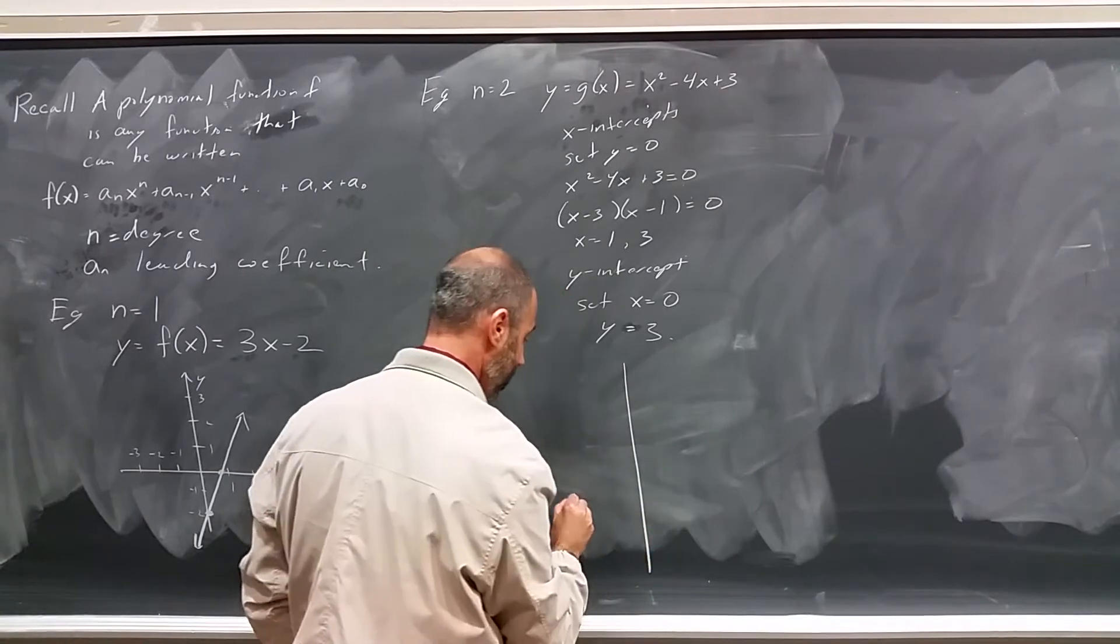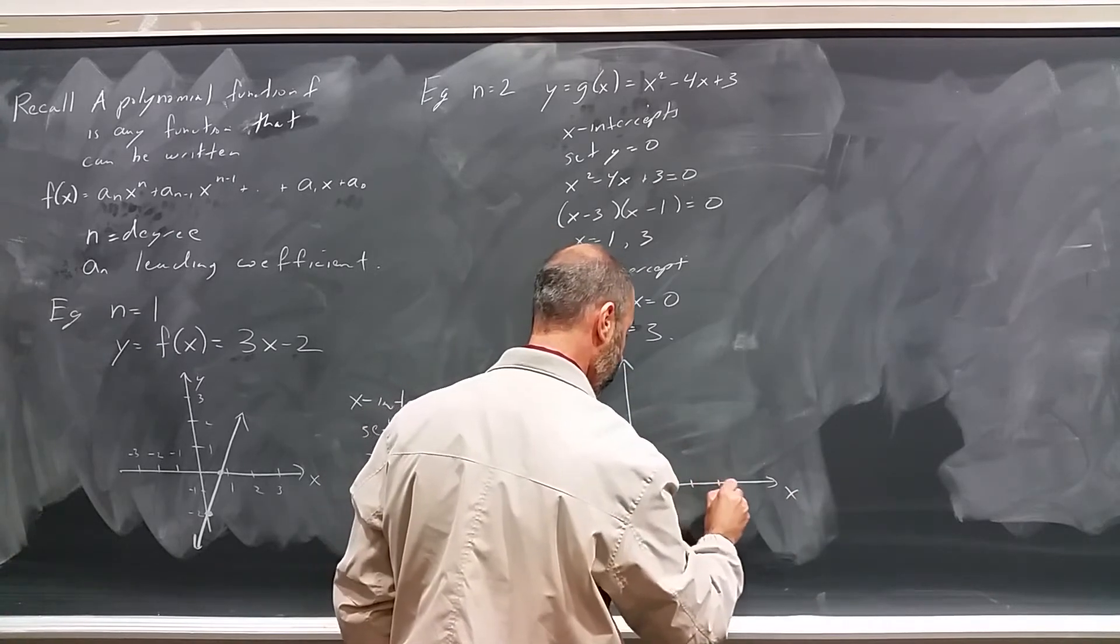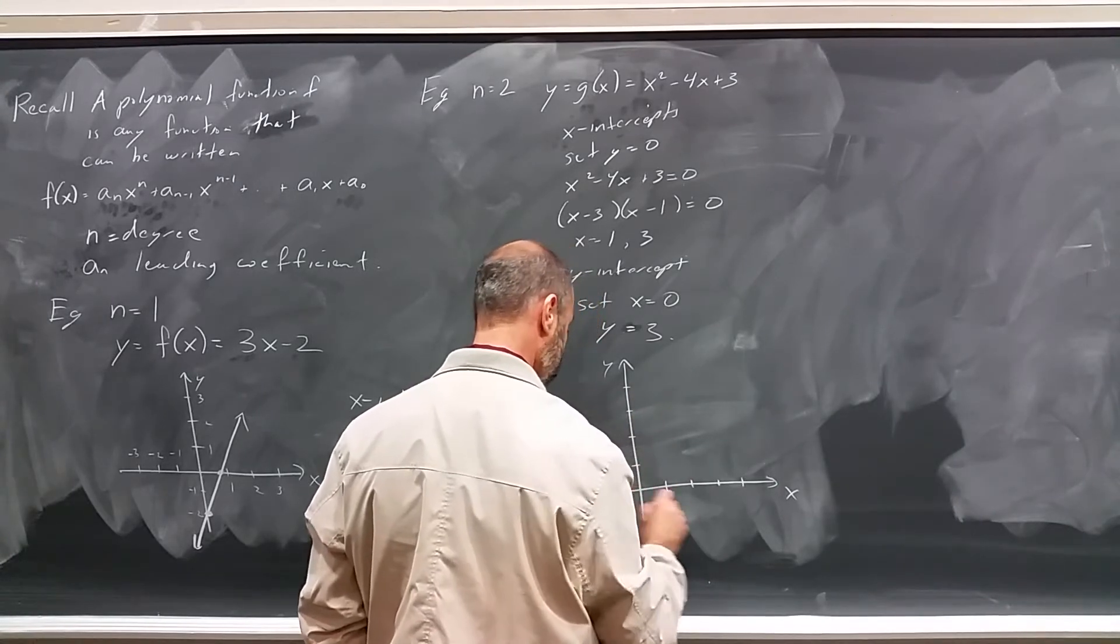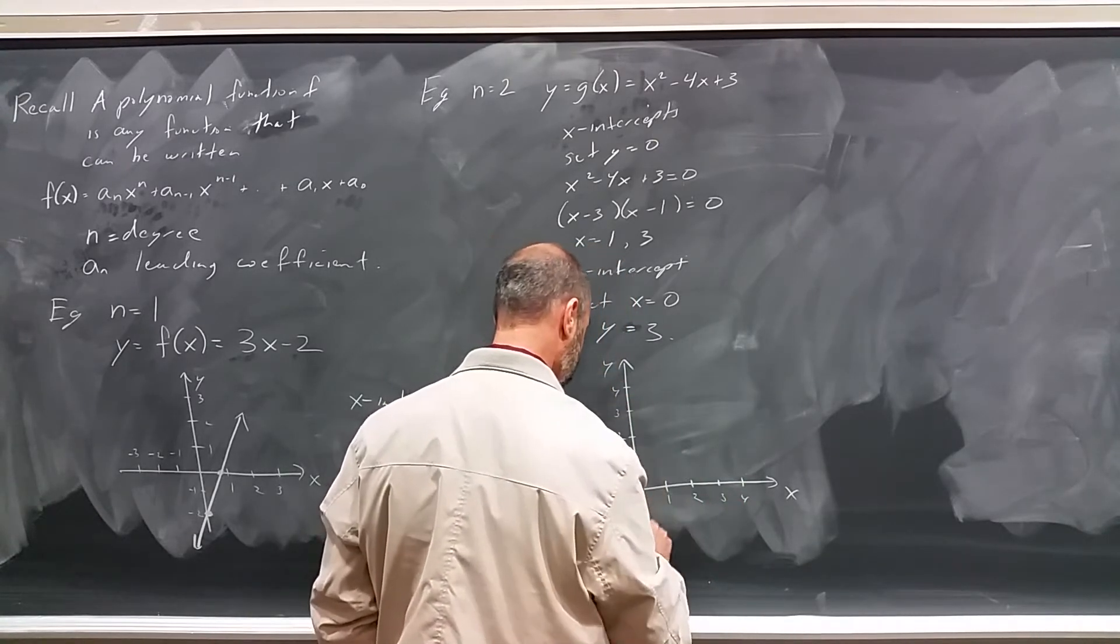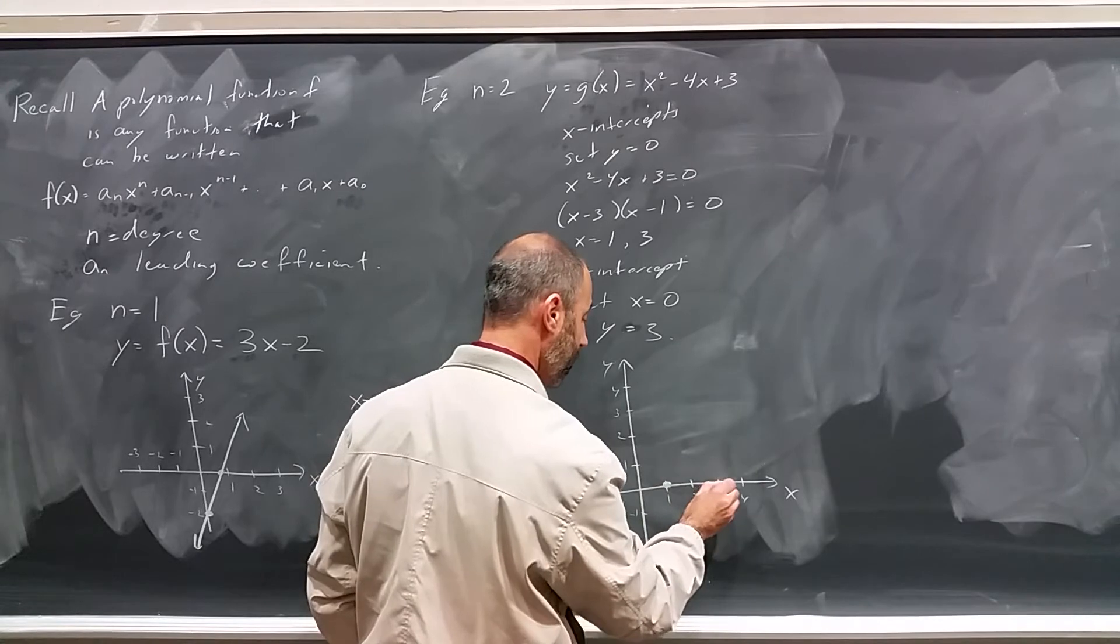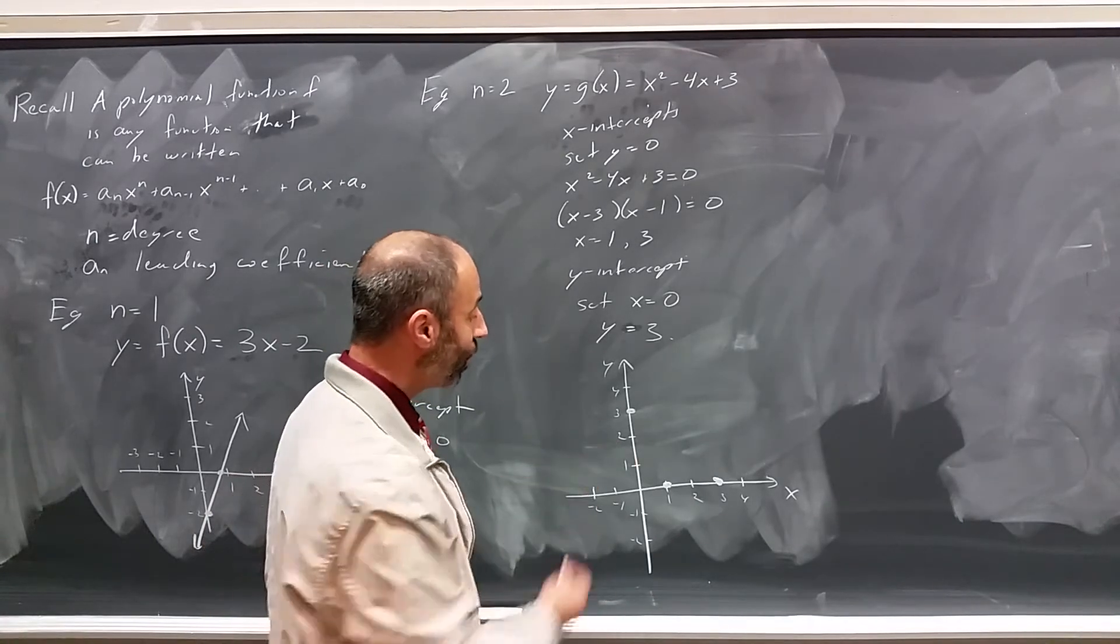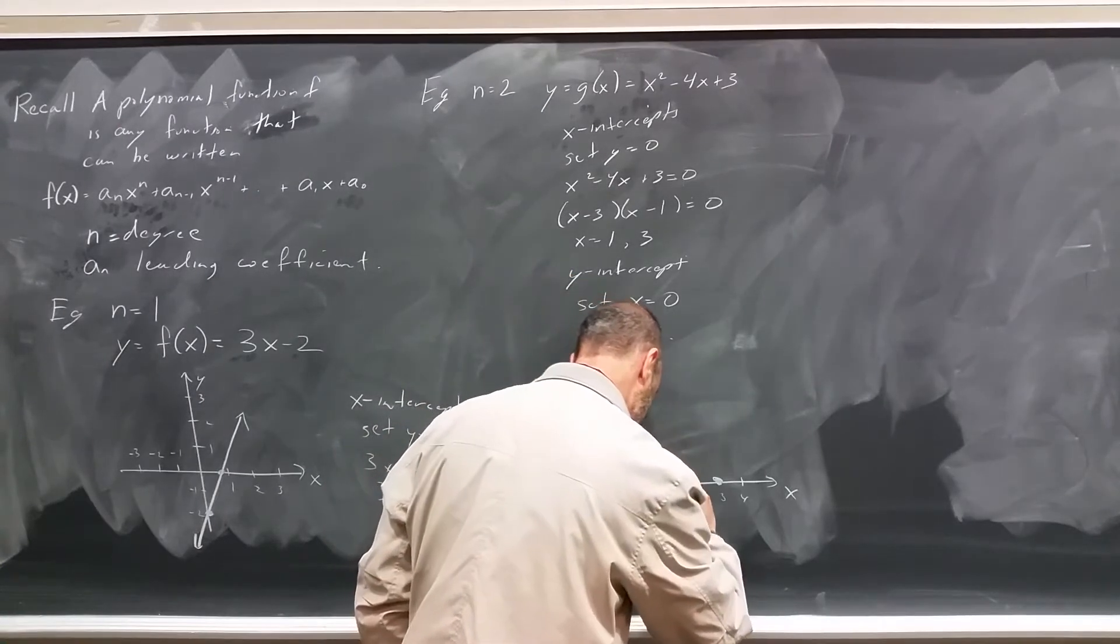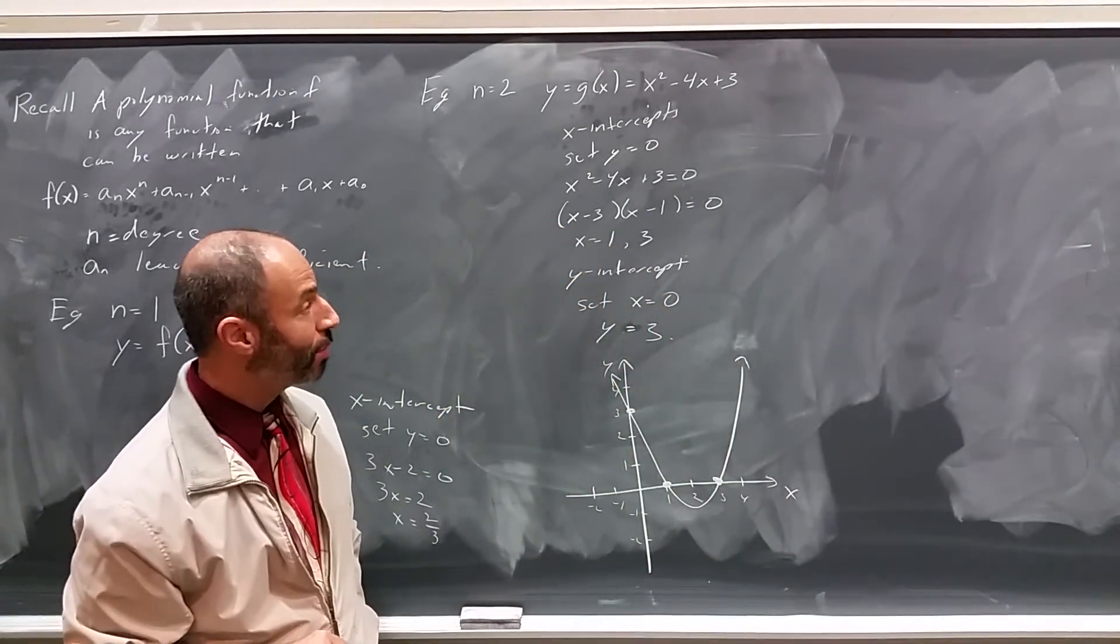So graphing this, we know it crosses the x-axis at 1 and 3. And we know it crosses the y-axis at 3. We know it's a parabola, we know it's right-side-up. Given those three points, we have a pretty good idea of what shape it must be. You studied a great deal about parabolas in high school.